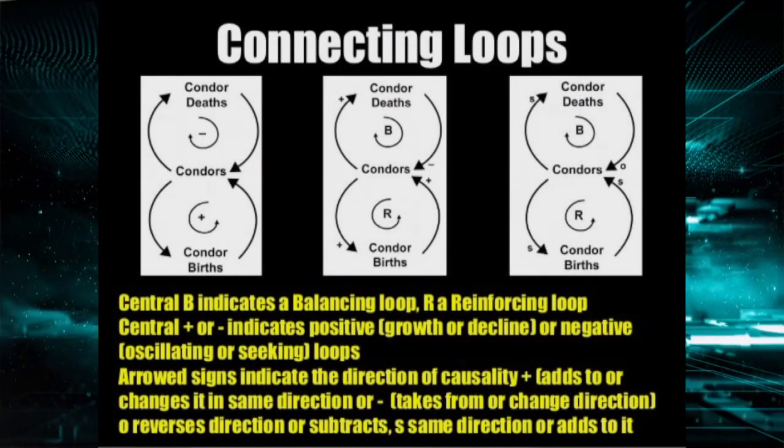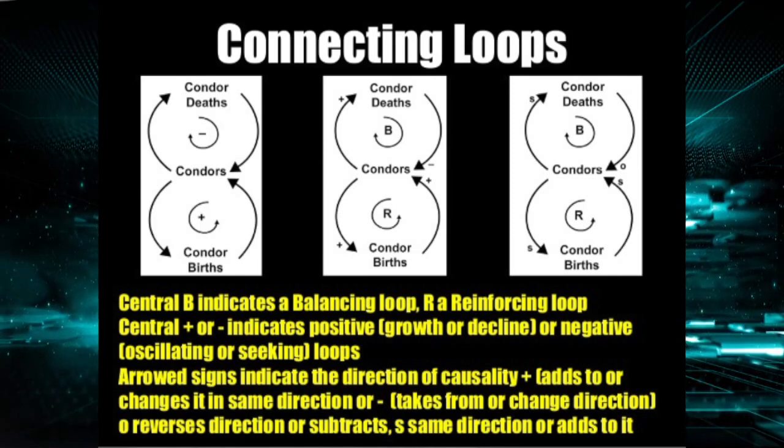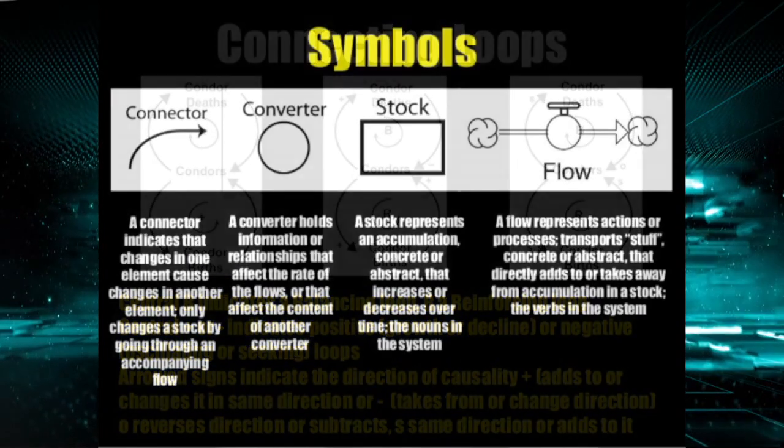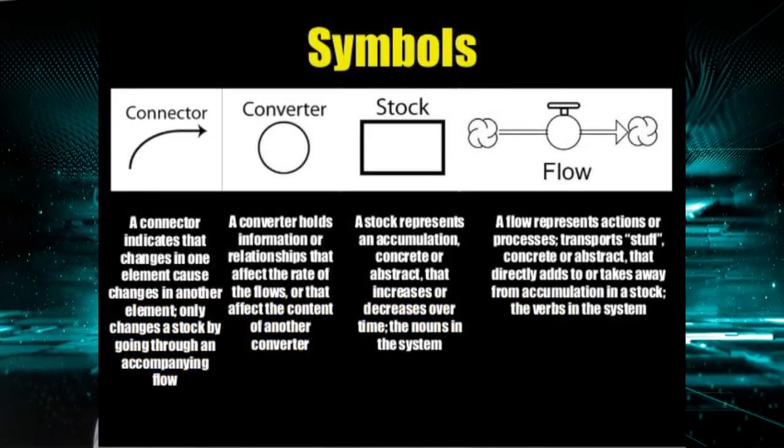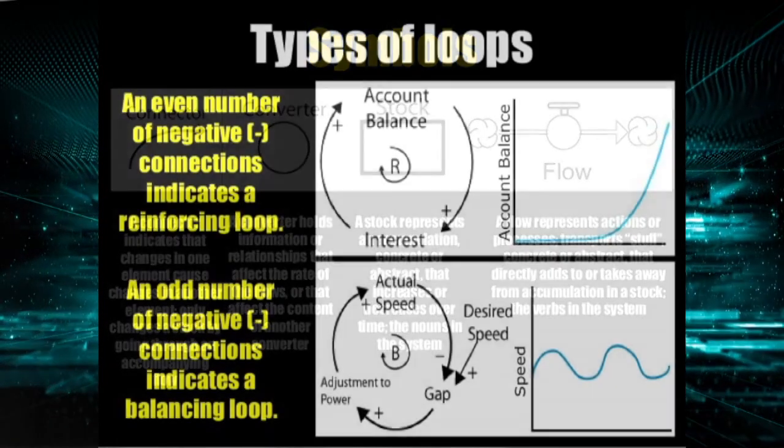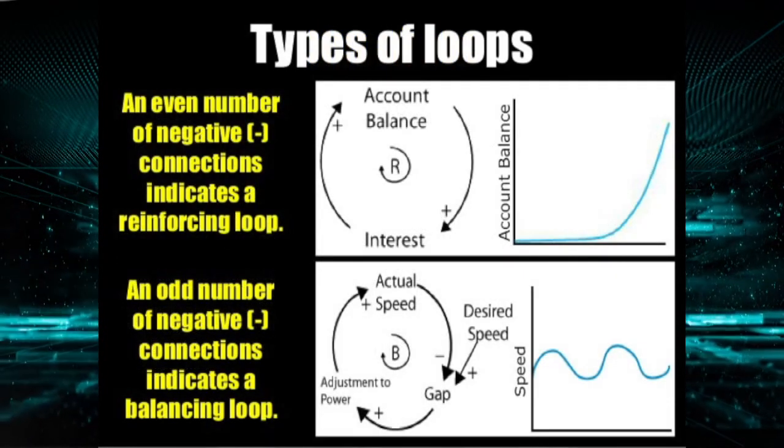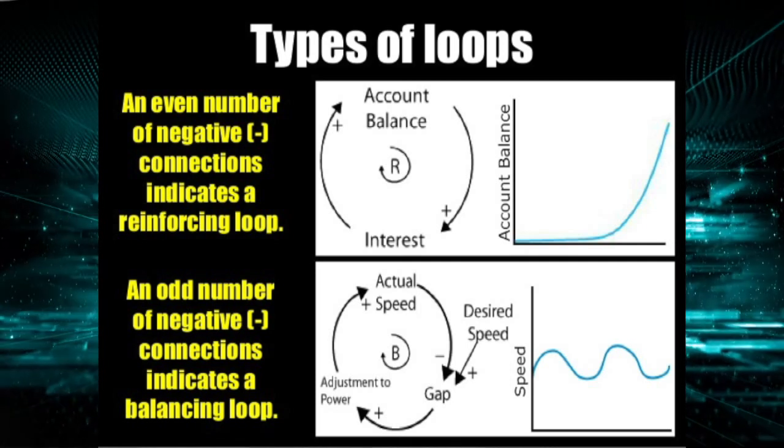When we connect feedback loops together, they can interact with each other. And while there are a range of signs and symbols used in the drawing of feedback loops, we still have just two types: balancing and reinforcing.